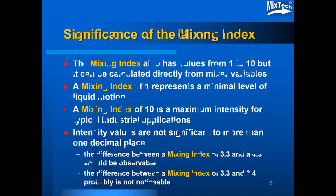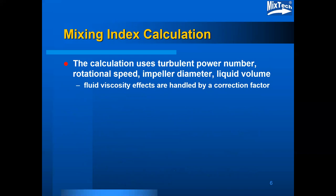The mixing index calculation starts with the turbulent power number, the rotational speed, the impeller diameter, and the liquid volume — all of which are necessary to establish characteristics associated with mixing intensity. Fluid viscosity effects are handled by a correction factor applied to the calculated mixing index.